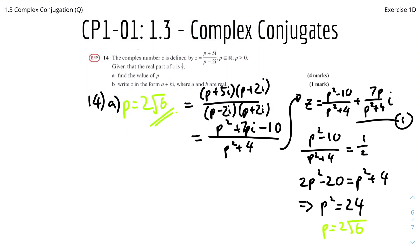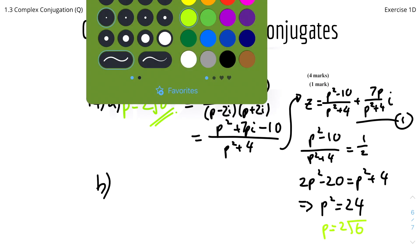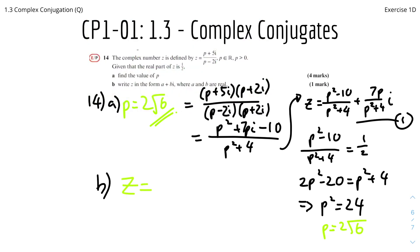For part b, write z in the form a + bi where a and b are real numbers. We already know the real part is 1/2. Substituting p = 2√6 into the imaginary part: 7p / (p² + 4) = 7 × 2√6 / (24 + 4) = 14√6 / 28 = √6 / 2. Therefore z = 1/2 + (√6 / 2)i, and that's the final answer.